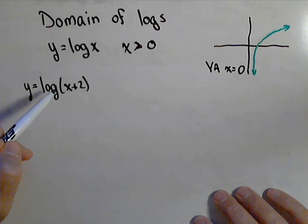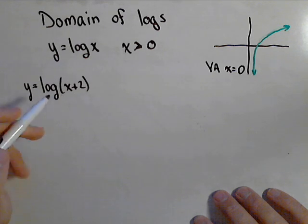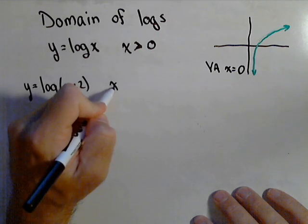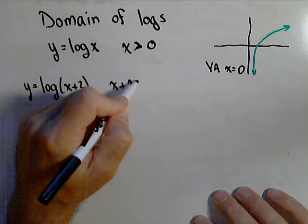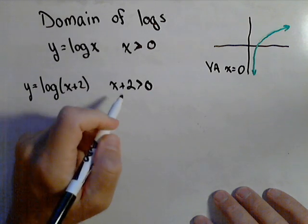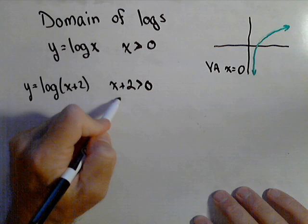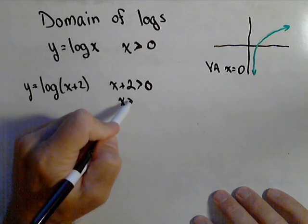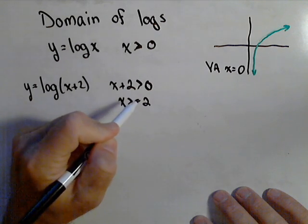Now, what we need, remember, we cannot take log of zero or a negative number. So to find the domain, what we could do is we could set x plus two. We know that that has to be greater than zero and solve that for x. So we get x has to be greater than negative two.